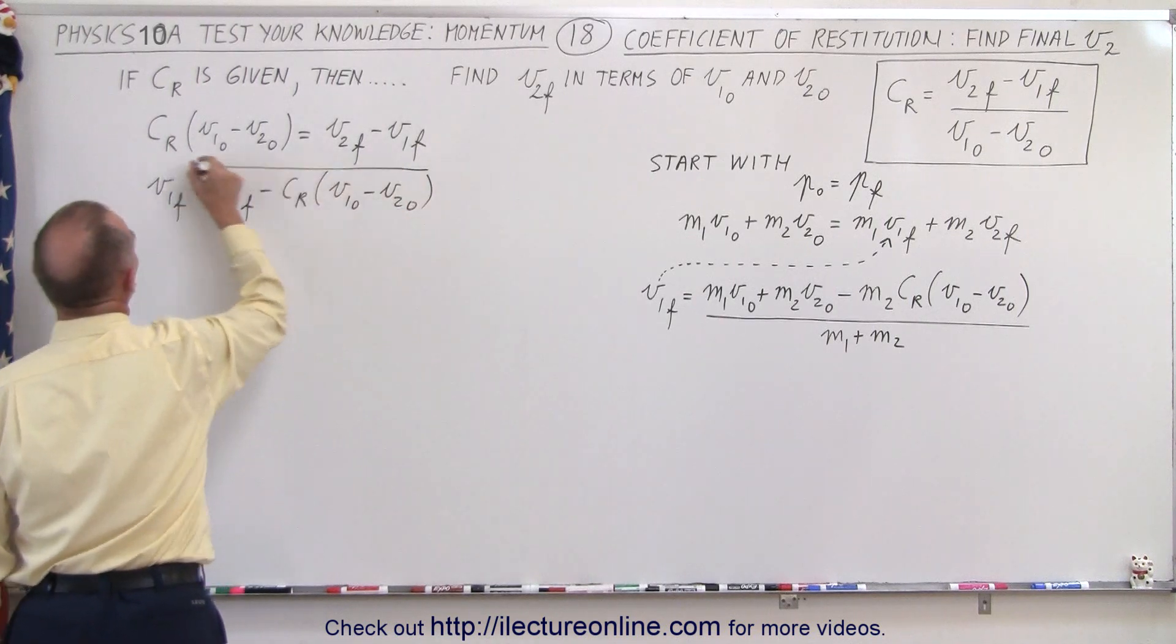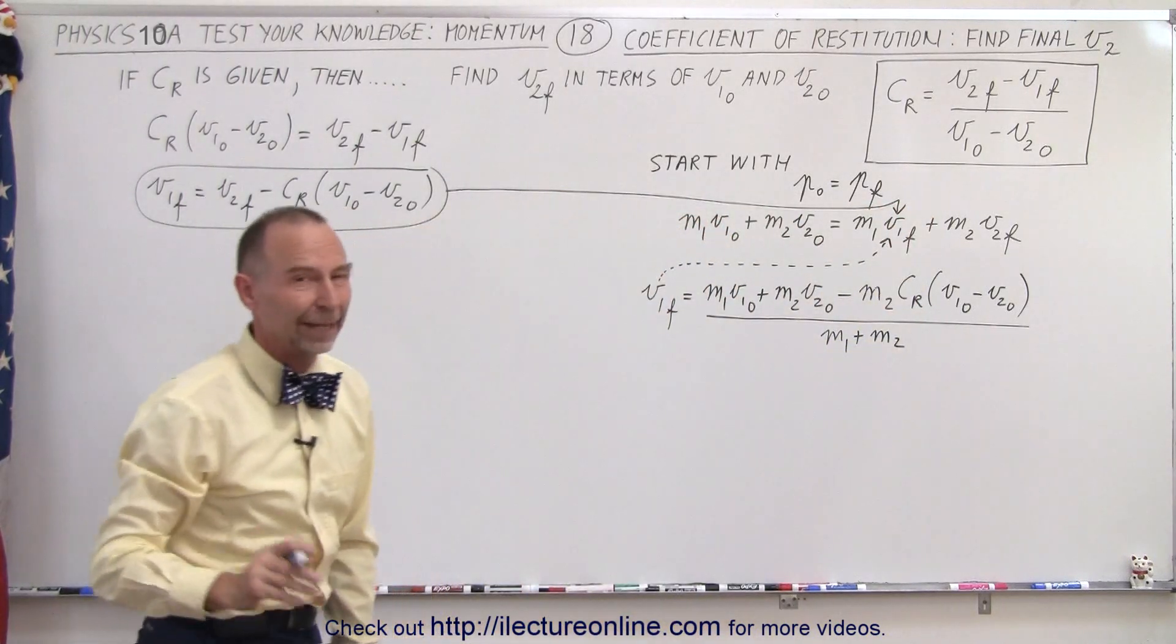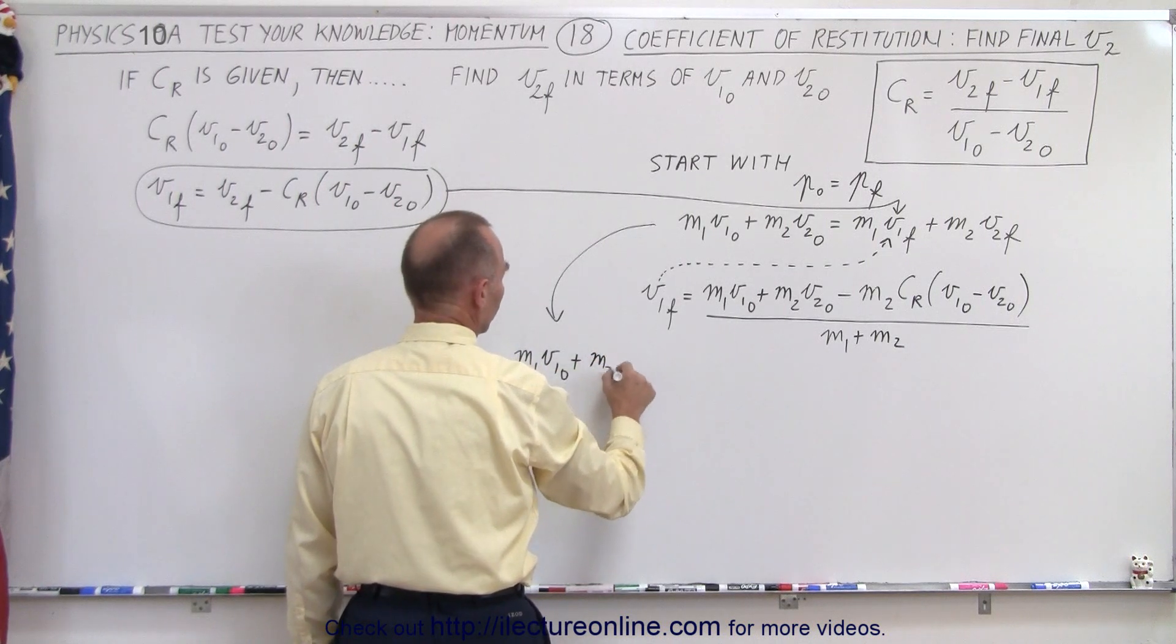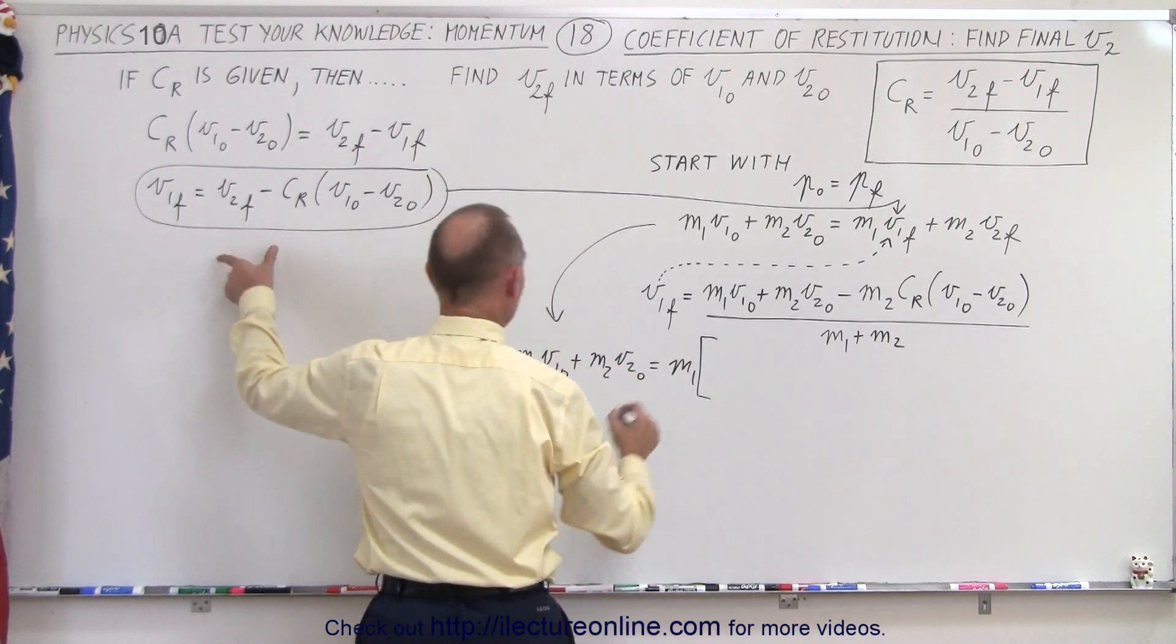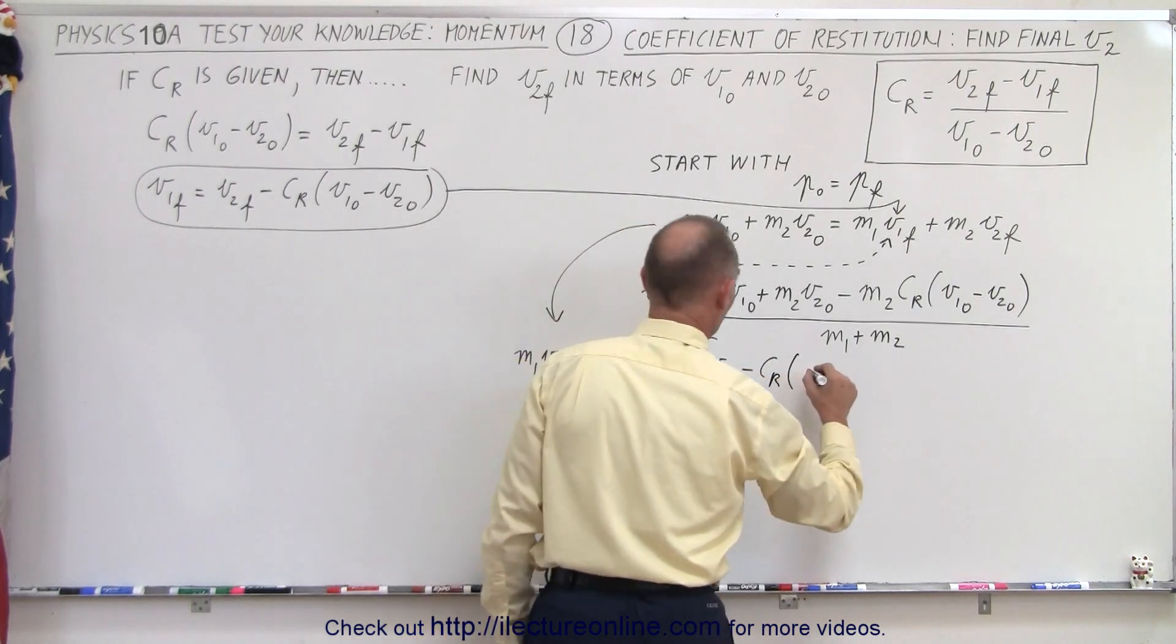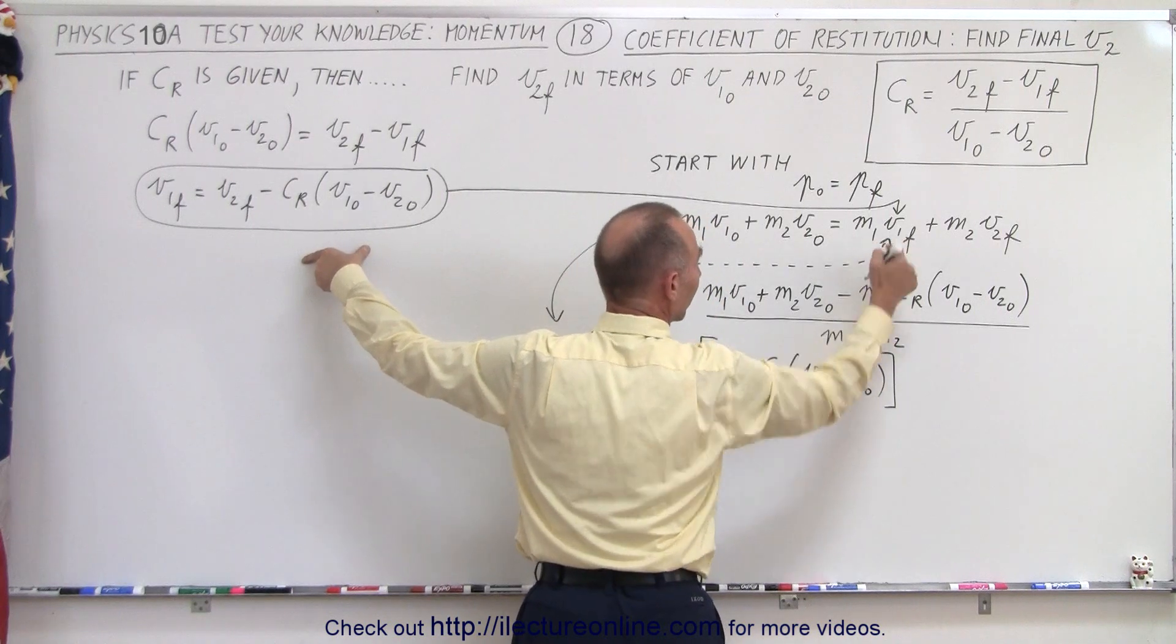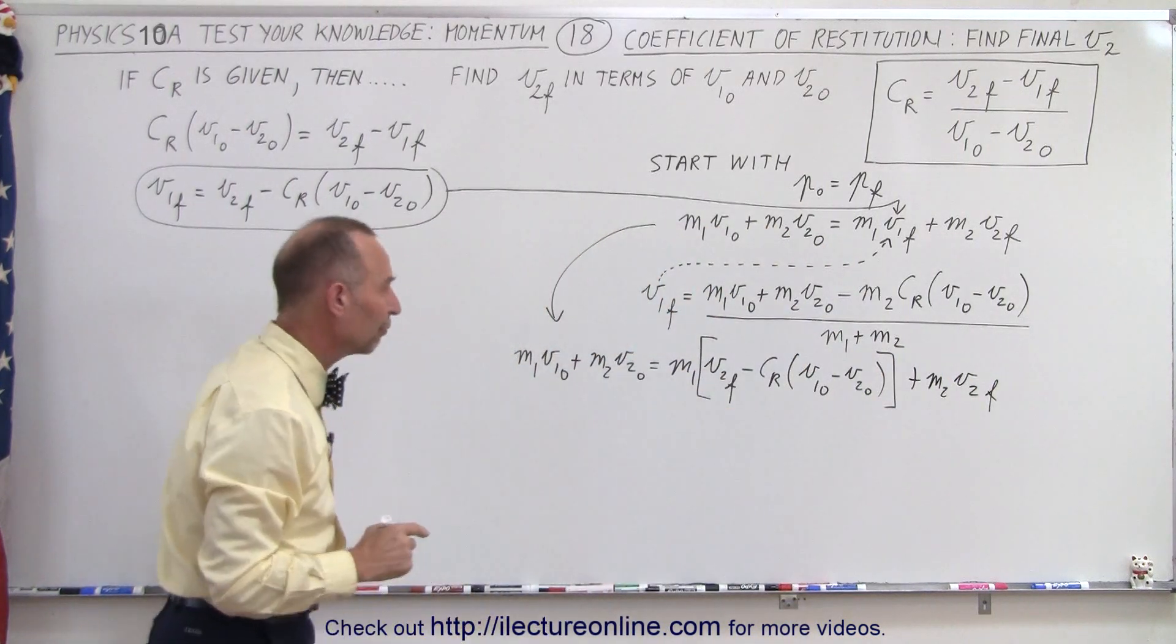And we'll take this equation right here and we'll substitute that in V1 final over there. And then let's see what we get. To do that, we continue over here with the equation. So we have M1 V1 initial plus M2 V2 initial equals M1 times, now we plug that in here which is V2 final minus the coefficient of restitution times V1 initial minus V2 initial. That's the whole thing right here, close the brackets, so we substitute M1 final plus M2 V2 final. And now we have to solve that equation for V2 final.